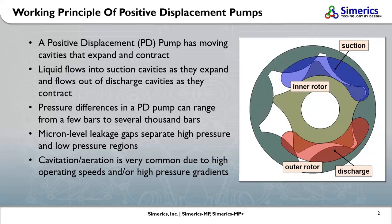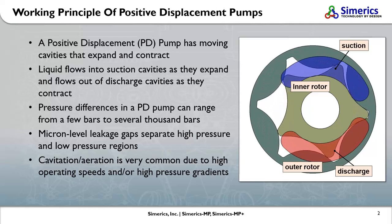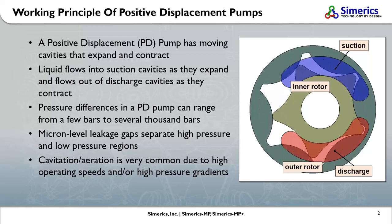The pressure differences in positive displacement machines can range from several bar to several thousand bar. Additionally, as these machines typically operate at high speeds, cavitation is a common occurrence.